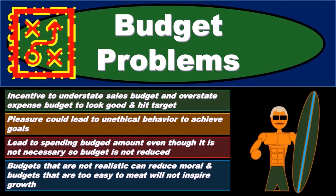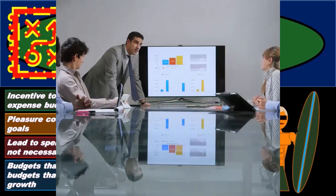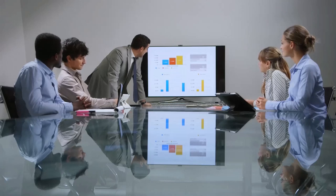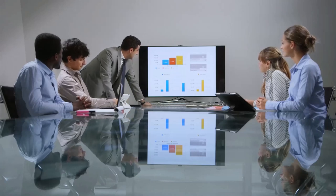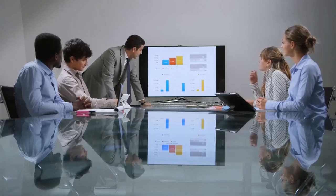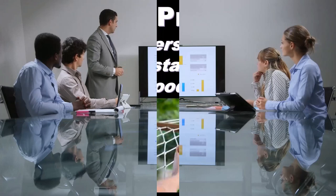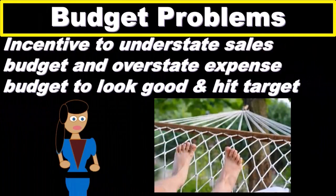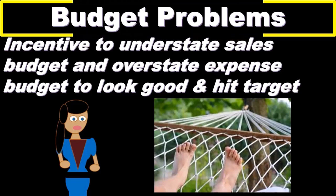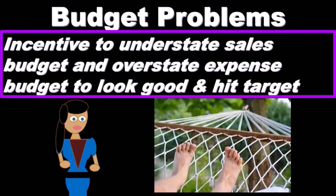In this presentation we will discuss budget problems, or potential pitfalls within the budgeting process, that we want to be aware of and that we want to avoid. One problem with the budget is that there is an inherent incentive within the budgeting process to try to understate the sales that will be budgeted for and overstate the expenses.